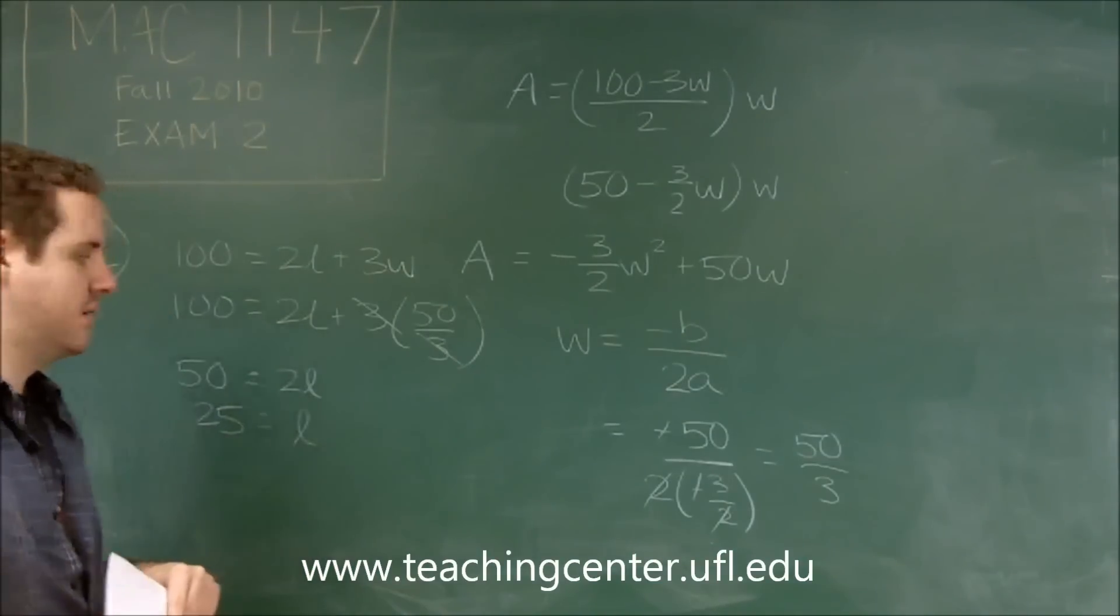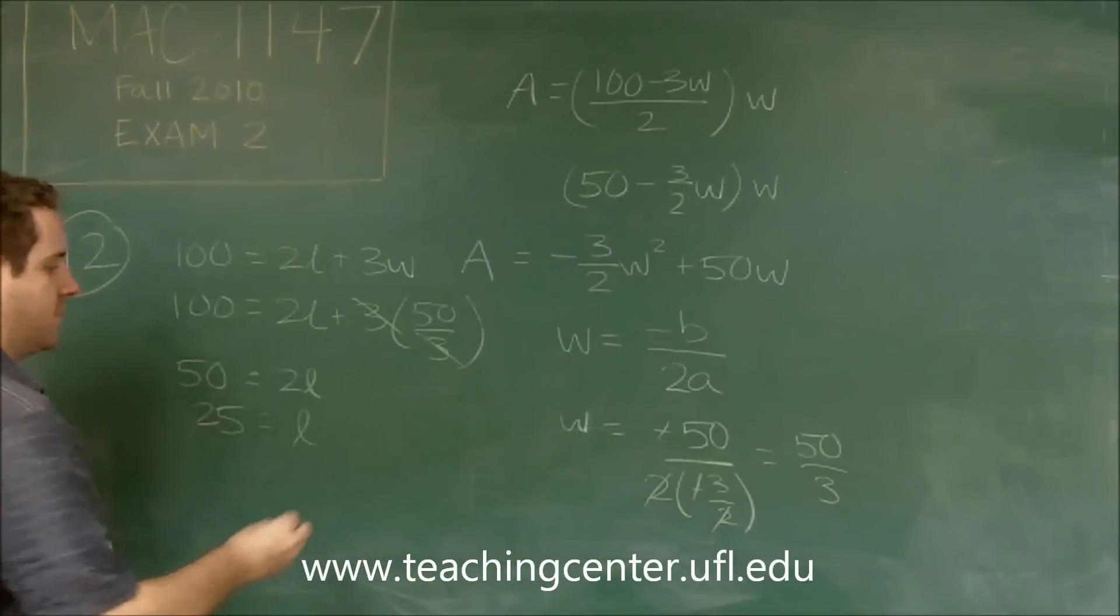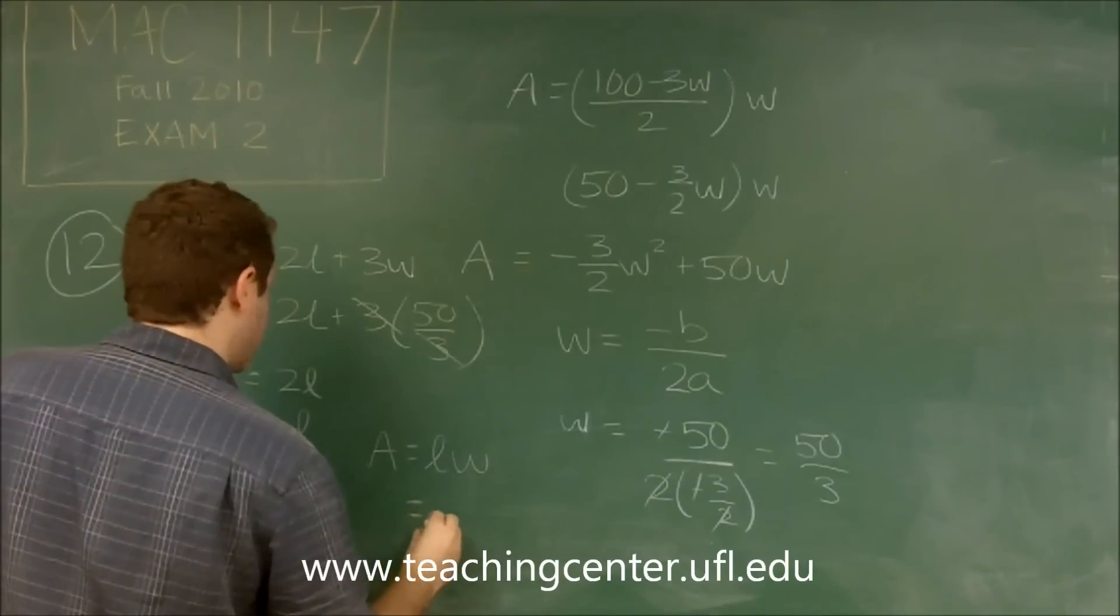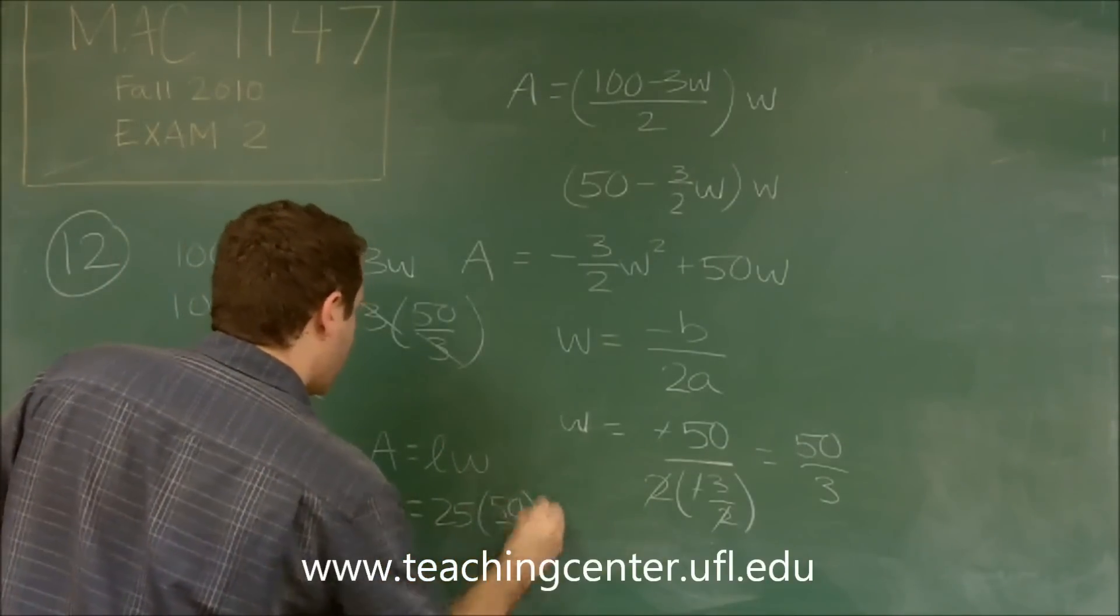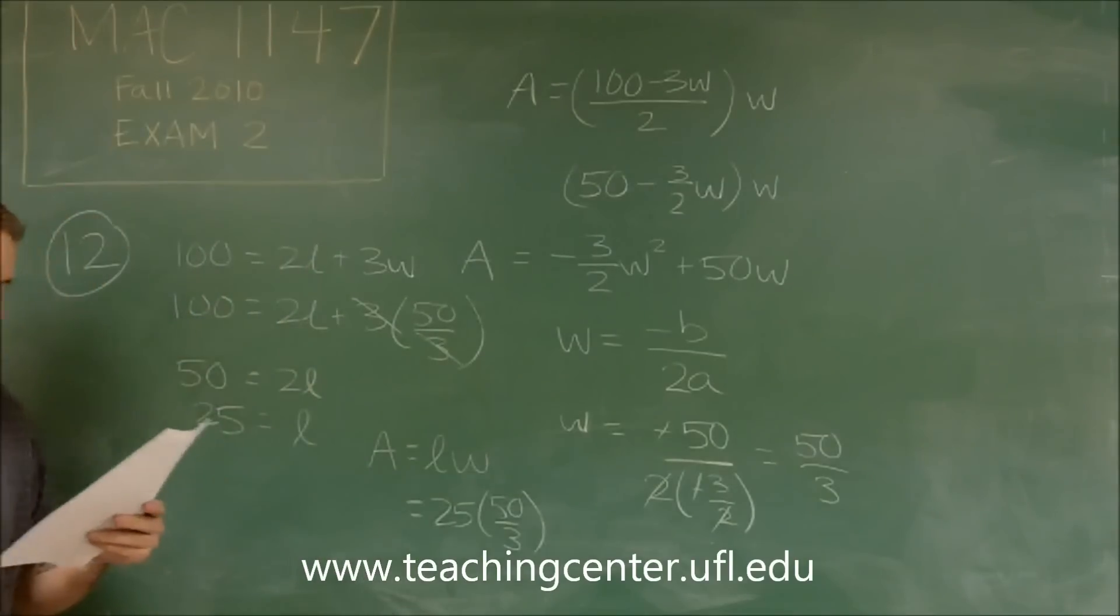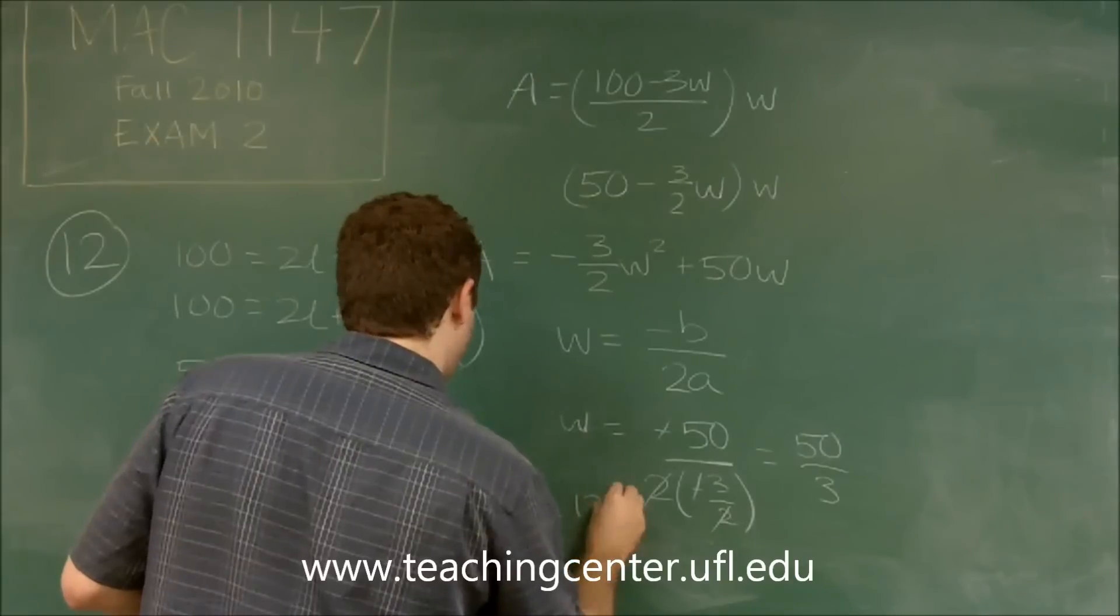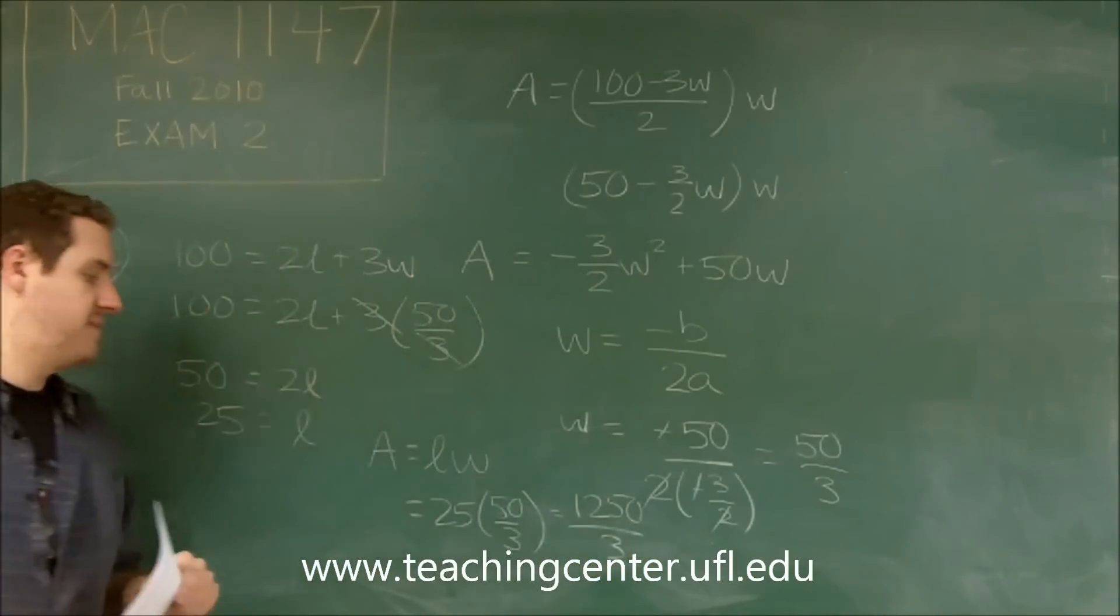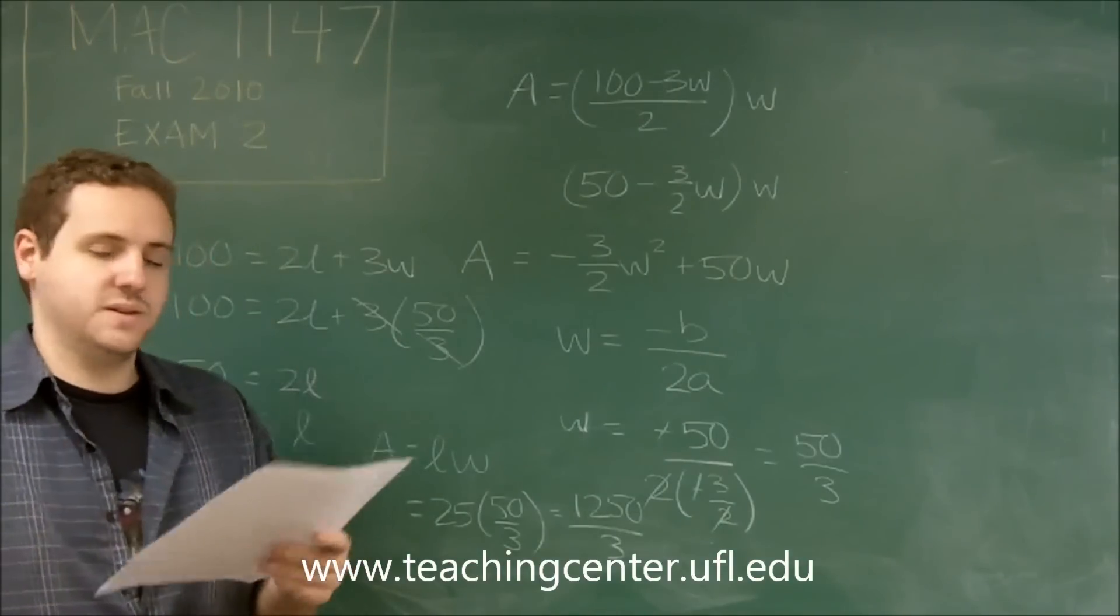And then of course our area is length times width. So here we get 25 times 50 over 3. So if you multiply that out, you'll get 1250 over 3 as our total area, which is answer choice E here.